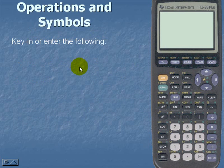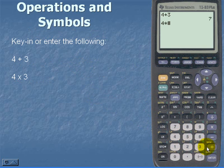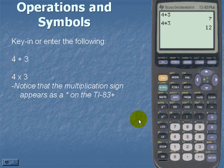Operations and symbols. Now we'll key in the following: four plus three. Notice that there isn't an equal sign. We'll simply hit enter. Four times three. Notice that the multiplication sign appears as an asterisk on the TI-83. We can also use a set of parentheses for multiplication.